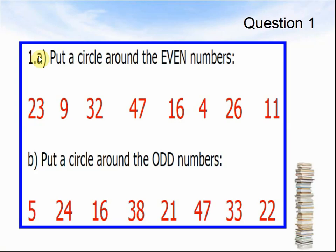Question 1, 1a. Put a circle around the even numbers: 23, 9, 32, 47, 16, 4, 26, and 11.